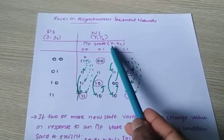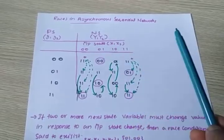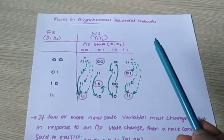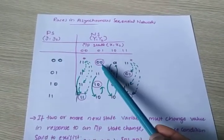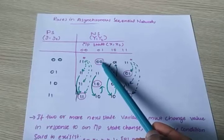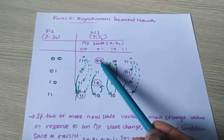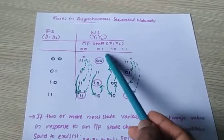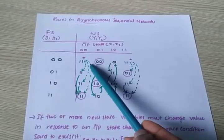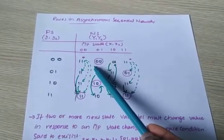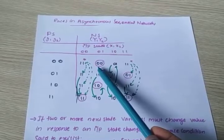So for x1, x2 = 0, 1 and y1, y2 = 0, 0, this corresponds to a specific block in the state table — the 0,1 column, 0,0 row. Let me mark this as the initial starting point.